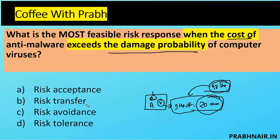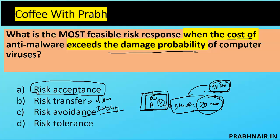Option B is risk transfer — transfer comes into the picture when likelihood is low and impact is high, like medical insurance we don't take because we go to hospital every day. Option C is risk avoidance — avoiding the source bringing risk — but in this case the risk already persists in the system. Option D is risk tolerance — a deviation that should not exceed capacity. The question uses the keyword 'most feasible.'